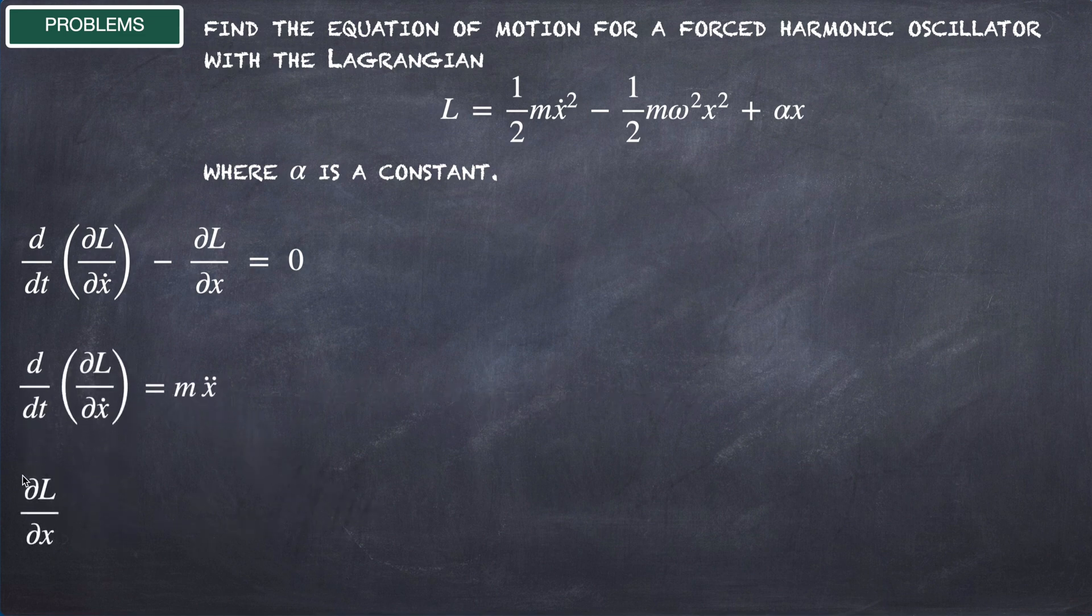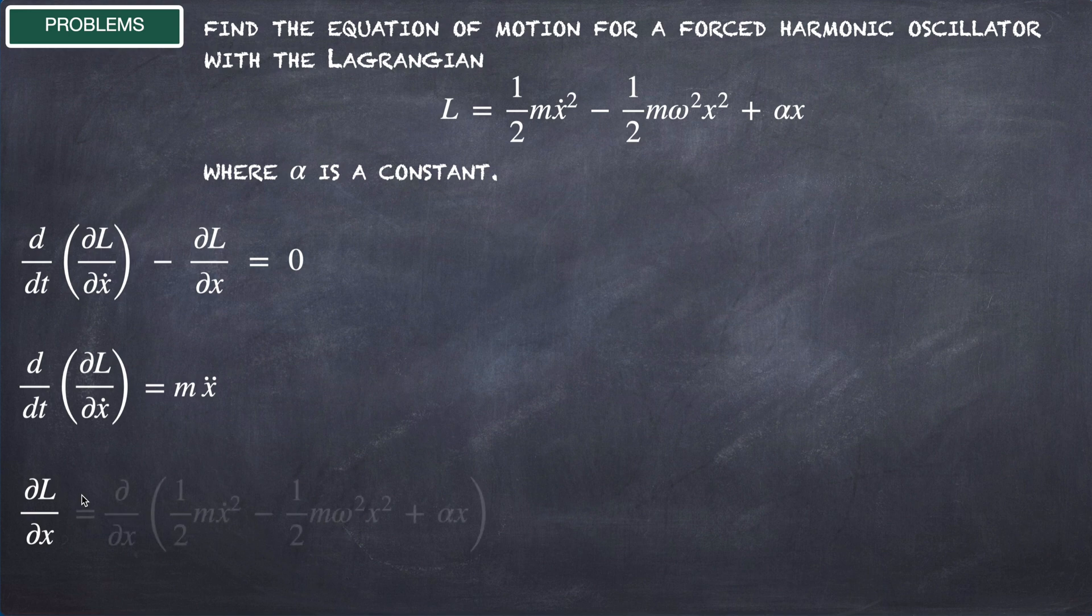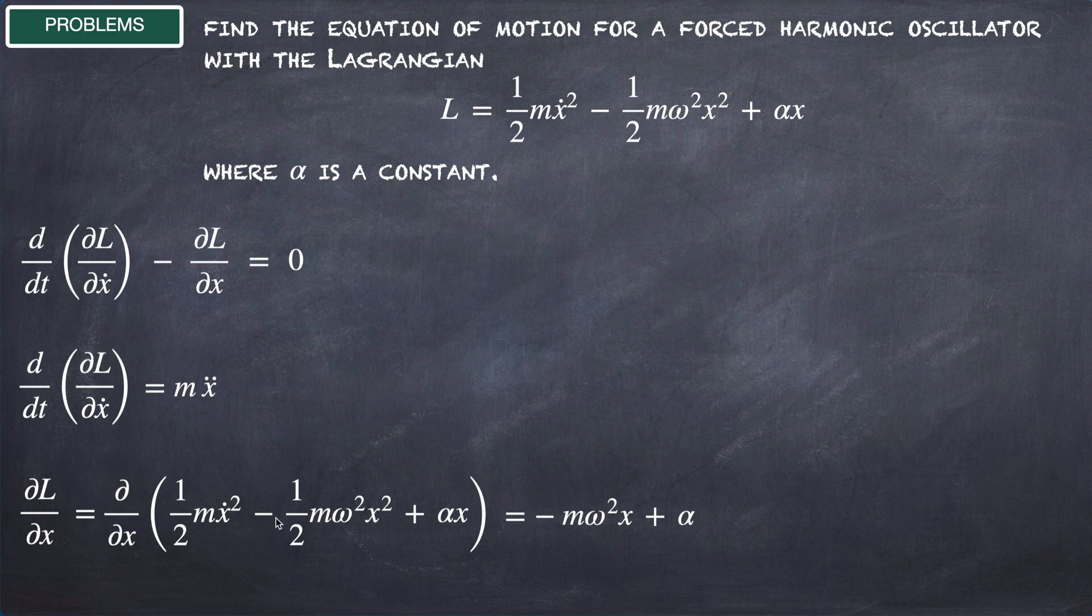What about the partial derivative of the Lagrangian with respect to x? This is -(1/2)mω² × 2x, which results in -mω²x + α.